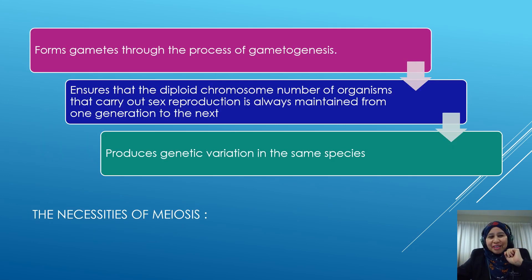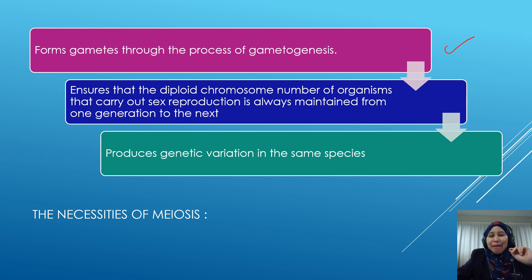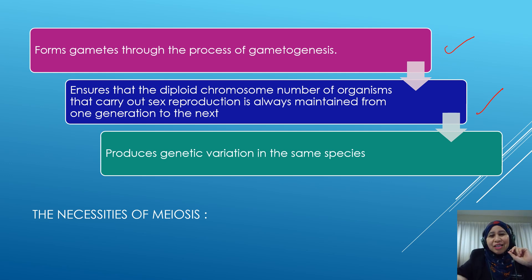Why is meiosis important? First, meiosis is important to form gametes through the process we call gametogenesis. Second, meiosis ensures that the chromosome number of organisms that carry out sexual reproduction is always maintained from one generation to the next, because gametes are only haploid. Third, meiosis can produce genetic variation in the same species, which ensures the survival of the species.